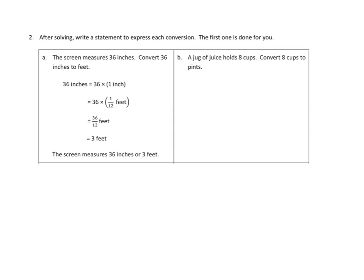Let's take a look at one more problem on tonight's homework. After solving, write a statement to express each conversion. The first one is done for you. Let's look at the first one again. So that's 2A. The screen measures 36 inches. Convert 36 inches to feet. So that's 36 copies of one inch. And then each of those inches, we can say, an inch is the same as one twelfth of a foot, because there's 12 inches in every foot. So those are the same things. And now we can multiply this, 36 times one twelfth, or 36 twelfths feet. And then we can do the division. 36 divided by 12 is 3. So we're able to say that the screen measures 36 inches, or 3 feet.